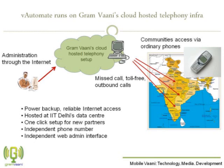Gramwani's voice application suite called V-Automate runs in a cloud-hosted telephony manner. This implies that no installations are required on the customer premises. Administrators just have to use the internet to run their applications and can engage the communities via missed calls, call-ins, toll-free, outbound calls, or whichever manner they want. The end users do not need sophisticated phones to access the applications — even ordinary phones or landlines are just as good.